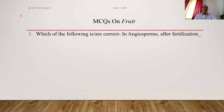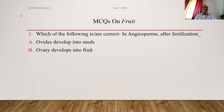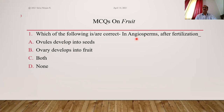Which of the following is or are correct in angiosperms after fertilization? Ovules develop into seeds, ovary develops into fruit, both, or none? In angiosperms, which consist of ovules inside the ovary, after fertilization the ovary develops into fruit and ovules develop into seeds. That is why they are called angiosperms — seeds present inside fruit after fertilization. Answer is C, both.